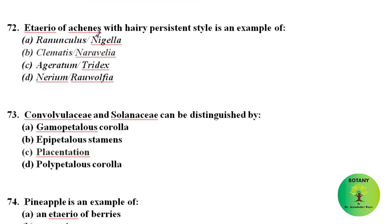Aetario of achenes with hairy persistent style is an example of which family? These are present in family Ranunculaceae, in two genera: Clematis and Naravelia. In these two genera, achenes with hairy persistent styles are characteristic.